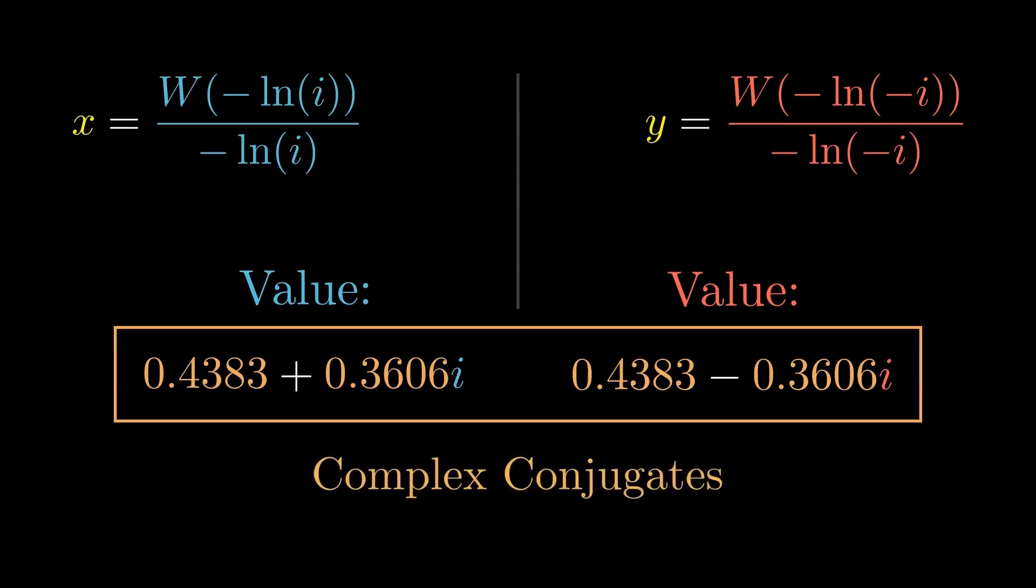The two limits are therefore complex conjugates. And this is the complete analytical explanation of where the infinite power towers converge.